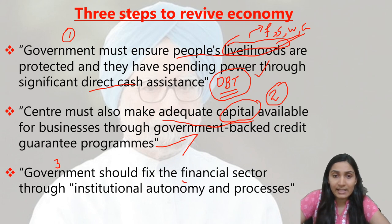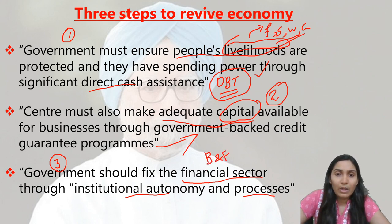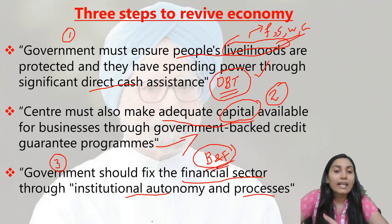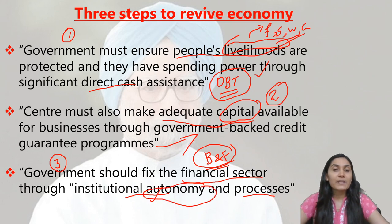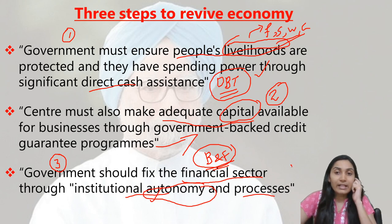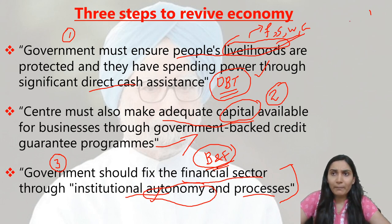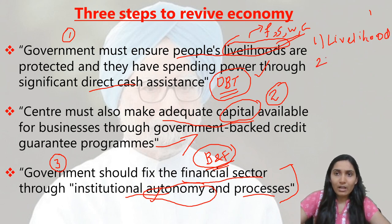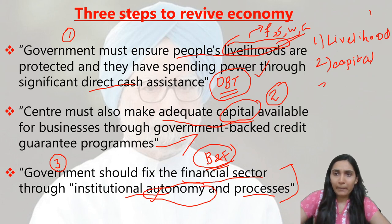The third step: the government should fix the financial sector through institutional autonomy and proper processes. The banking and finance sector needs reform, and this can be achieved by providing institutional autonomy — allowing financial institutions the freedom to make their own major decisions independently.